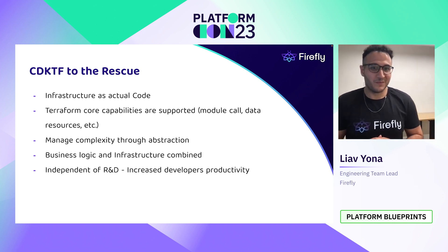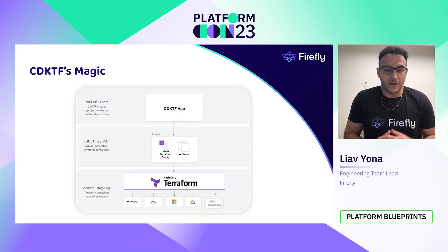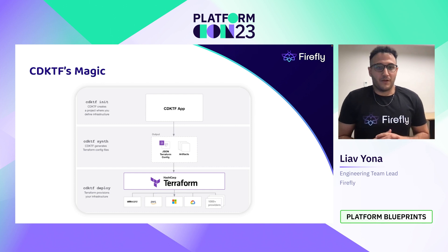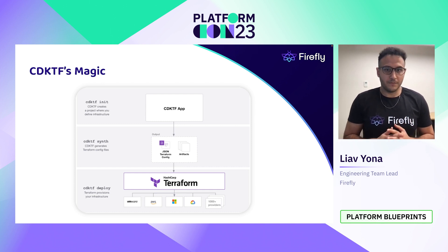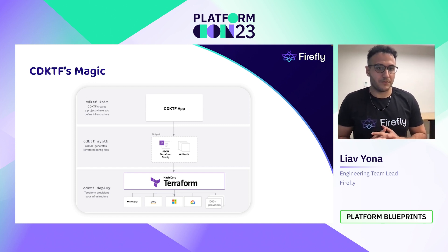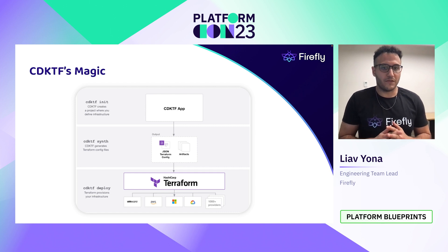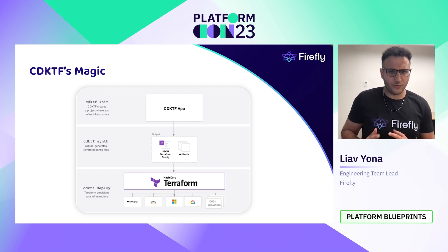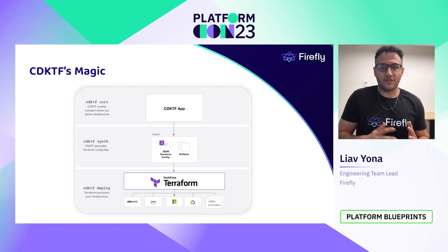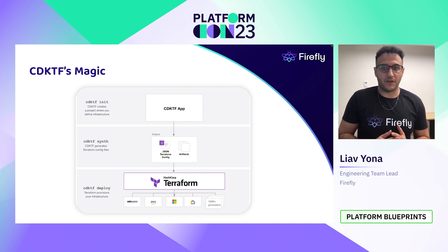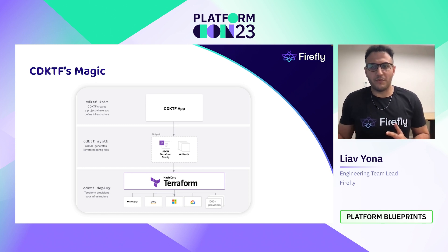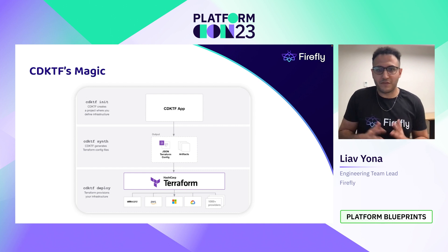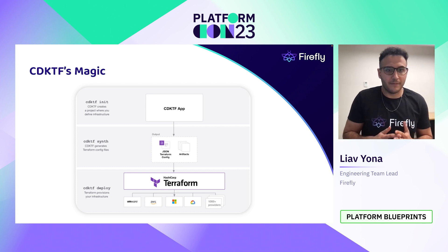Wow, so powerful. I bet you're wondering how it works. In general, the CDK magic is quite simple. Firstly, you initiate a new stack like Terraform, then implement your infrastructure with your favorite programming language. Then it converts the code using JSII. The JSII tool enables publishing libraries in all supported languages from a single TypeScript code base. CDKTF uses the TypeScript types to generate an assembly file that JSII uses to generate code bindings for other programming languages. What we're left with is a Terraform configuration file. All we have to do is deploy our infrastructure, just like Terraform apply.